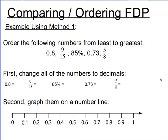Let's change them all into decimals first. Eight tenths is already a decimal, so I'm going to leave it the way it is. Nine fifteenths is a fraction, and if you remember, the way you change a fraction into a decimal is by dividing — you take the numerator and divide it by the denominator. That's what a fraction is; a fraction is a division problem. That fraction bar is a division sign, so you can always divide the numerator by the denominator. Doing that division, nine fifteenths equals zero point six.